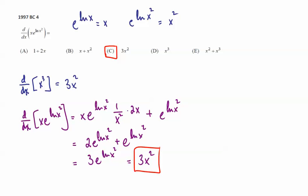And so the whole first term boils down to just be 2 e to the ln of x squared plus e to the ln of x squared. And that is going to give us 3 e to the ln of x squared. Again, you don't see any answers like that. So you are going to need to use the properties of logs here, which say e to the ln of whatever is just whatever. So e to the ln of x squared is x squared.